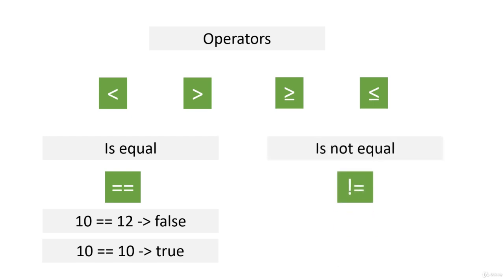So 10 is not equal to 12 is true, and 10 is not equal to 10 is false. Once again, you can use variables instead of literal values as operands. I suggest you play with this a bit, and I'll see you in the next video.